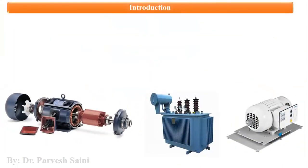What is an electrical machine? An electrical machine is a machine which works in relation with electrical energy. That means any machine in which electrical energy is somehow associated or involved is termed as an electric machine or electrical machine.